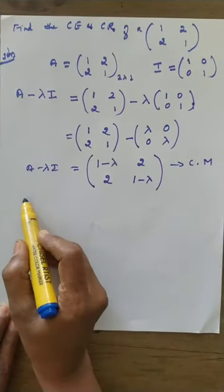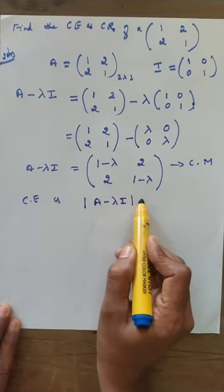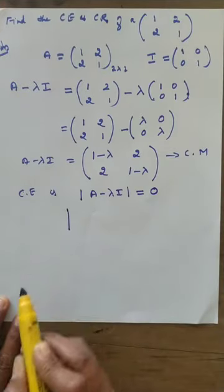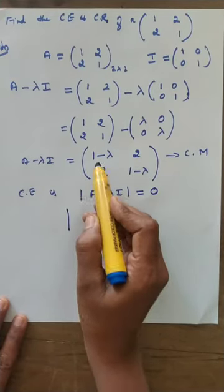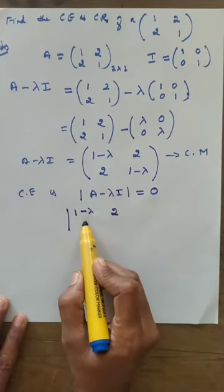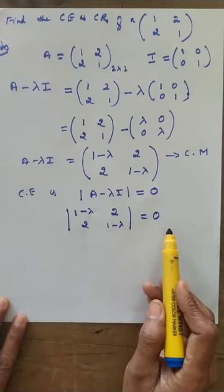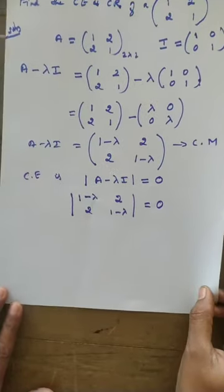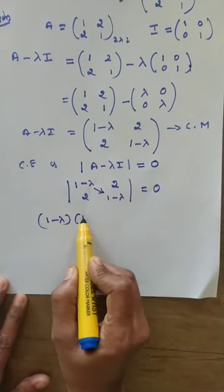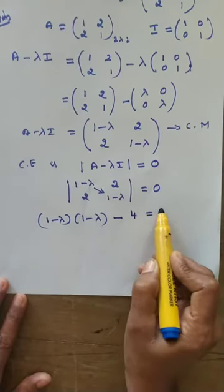The characteristic equation is determinant of A minus lambda I equals zero. So substitute: determinant of [1-lambda, 2; 2, 1-lambda] equals zero. Cross multiply: left side gives (1-lambda)(1-lambda), minus right side 2 times 2 equals 4, all equal to zero.